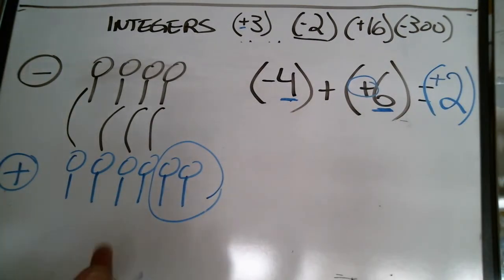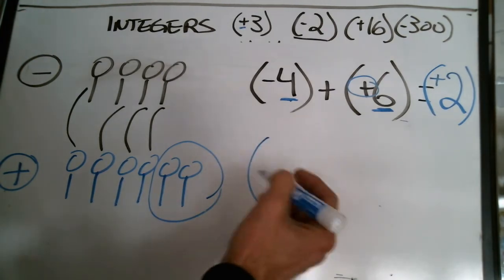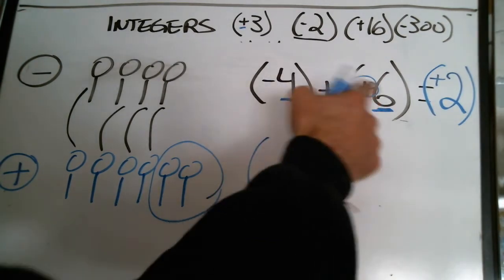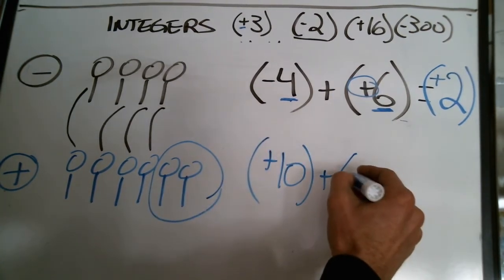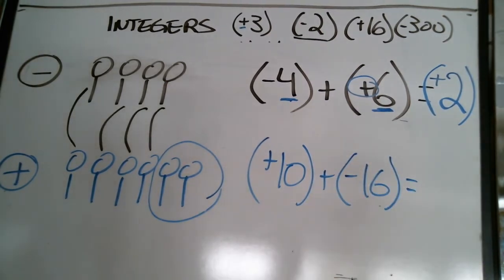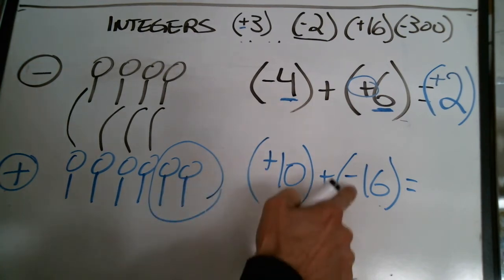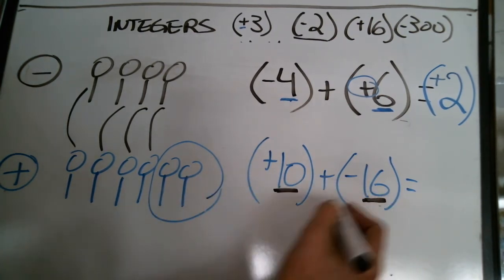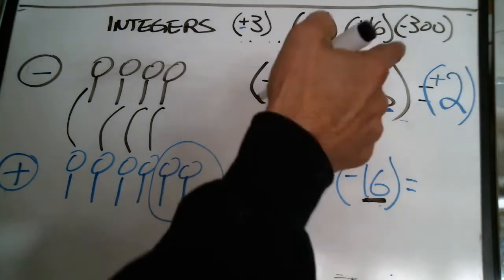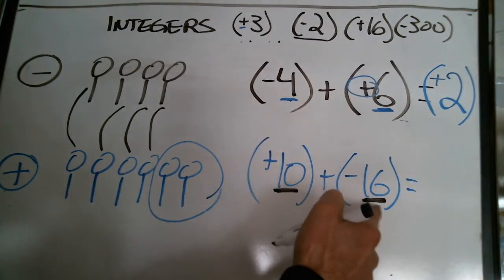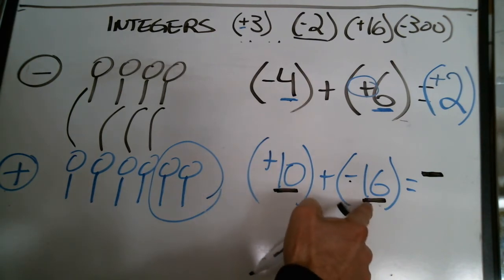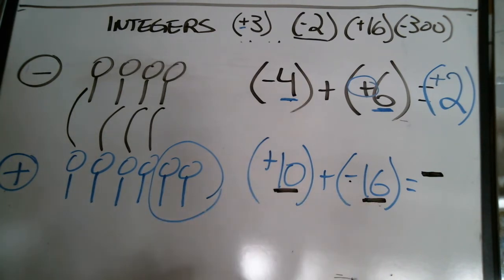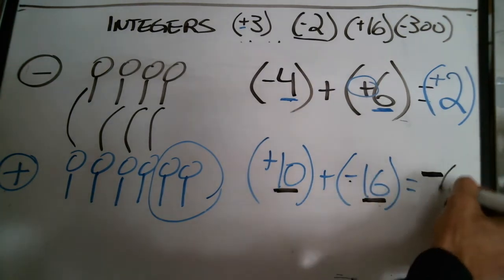We can think about this in terms of teams. Try this one: positive ten plus negative sixteen. Which team is bigger? I've got a positive team with ten and a negative team with sixteen. The negative team has more players, so my sign is going to be negative. The negative team wins by how many? Sixteen minus ten is six, so my answer is negative six.